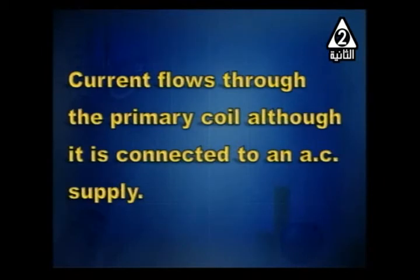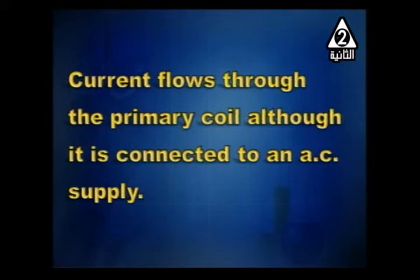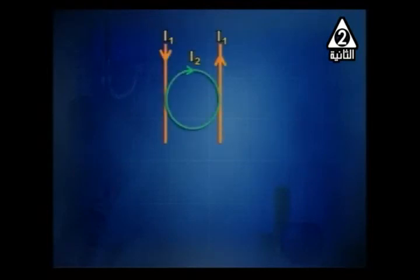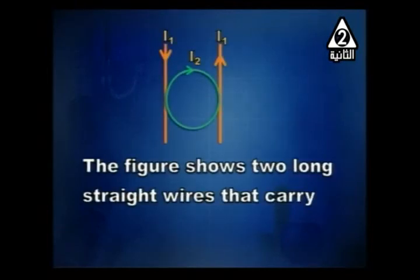When does the current in the primary coil equal zero? We have a primary coil connected to the mains, but no current passes through it. This happens when the secondary coil — that is, the secondary circuit — is unloaded or open. When the secondary circuit is open, the primary current equals zero.